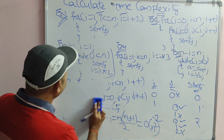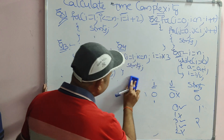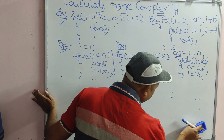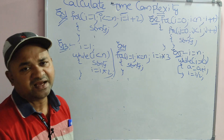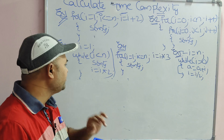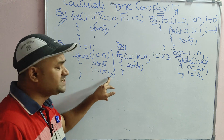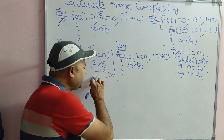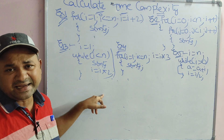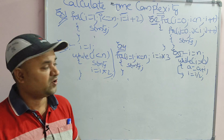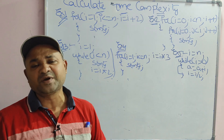Now let us see the third example. Initial value of i is equal to 1, while i less than n. Here we do not know what n value is. The body has some statements, and then i is equal to i into 2. If we have multiplication like i equals i into 2 and n value is not given, then the time complexity is big O of log n. Likewise, if instead of multiplication we have a division operator, then also the time complexity is big O of log n.